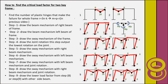Joint rotation in many cases — not all cases — makes the load factor lower. In step five we draw the sway mechanism with the left beam mechanism; step seven draws the sway mechanism with the left beam mechanism; step eight draws the sway mechanism with the right beam mechanism and joint rotation; step nine draws the lower load factor from step eight or step nine combined with the other side beams. On the left of the slide we see the form of all mechanisms in all steps already described.